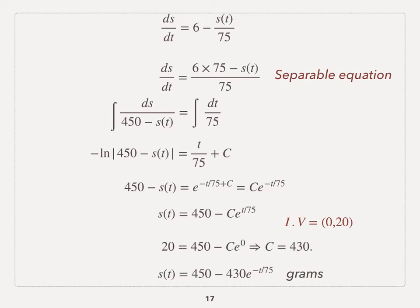The goal is to find s, so you want to manipulate the natural log function. Raise both sides from e to get rid of the natural log, and then you move s to one side and solve for s. Once you have s, you use the initial value (0, 20). You plug 0 into t, you plug 20 into s to find C. And in this case, C equals 430.